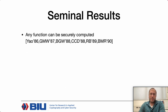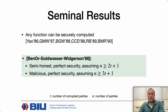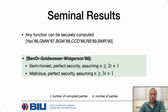One of the seminal results in secure computation is that of Ben-Or, Goldwasser, and Wigderson in 1988. It says that secure computation is possible in the synchronized setting with perfect security, assuming the adversary corrupts at most one-half of the parties. In the malicious setting, the adversary can corrupt at most one-third of the parties. Both results are tight.